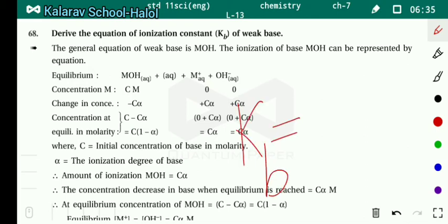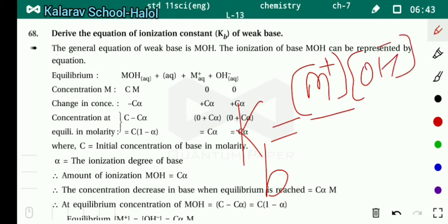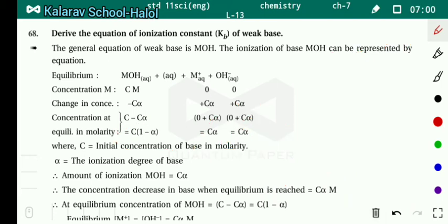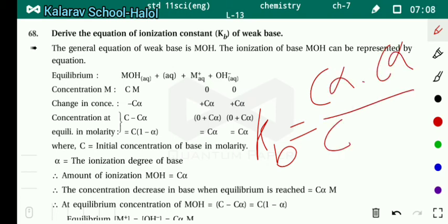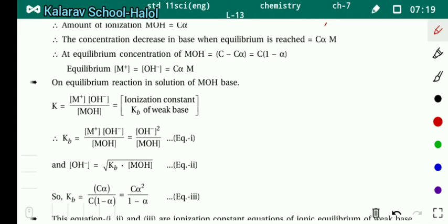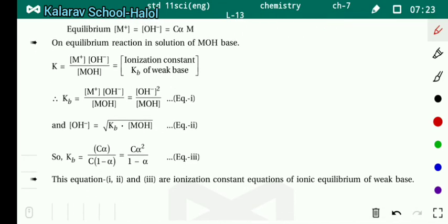After some time, the initial concentration decreases by Cα for reactant and increases by Cα for each product. At equilibrium: concentration of MoH equals C(1−α), concentration of M⁺ equals Cα, and concentration of OH⁻ equals Cα. Using the same method as for acid, Kb equals concentration of M⁺ into OH⁻ divided by concentration of MoH, giving Kb equals Cα²/(1−α).